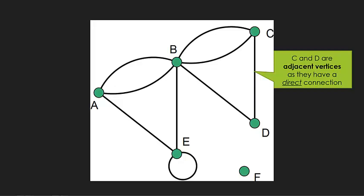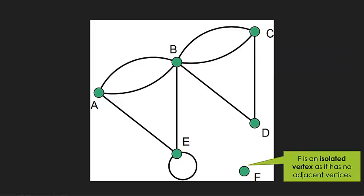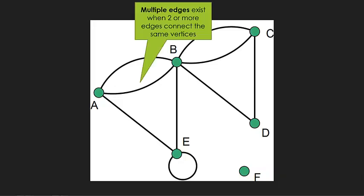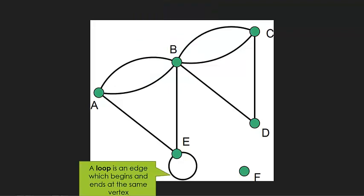Some of our key things that we need to know about networks. We have adjacent vertices and adjacent vertices mean that there is a direct connection. So we can see here C and D are adjacent. An isolated vertex is one that has no adjacent vertices. So there's no edges connecting into vertex F, therefore it is isolated. Multiple edges is when we have more than one pathway between two sets of vertices. So we can see here A and B have two pathways shown. Same with B and C, so there are multiple edges between B and C as well.